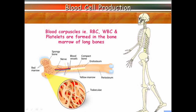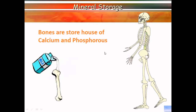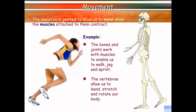In the picture you can see the red bone marrow and the yellow bone marrow. Next, mineral storage: bones are the storehouse of calcium and phosphorus, which are released into the blood when needed. This helps in regulating calcium and phosphorus levels in the blood whenever required.